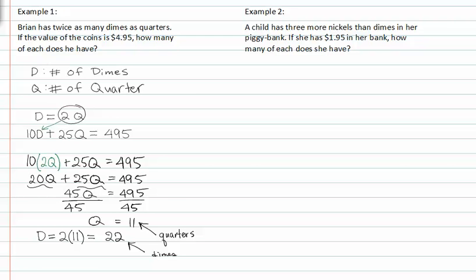In example two, a child has three more nickels than dimes in her piggy bank. If she has one dollar and ninety-five cents in her bank, how many of each does she have? We know that she has nickels and dimes. Nickels, or n, represents the number of nickels she has, and d represents the number of dimes.